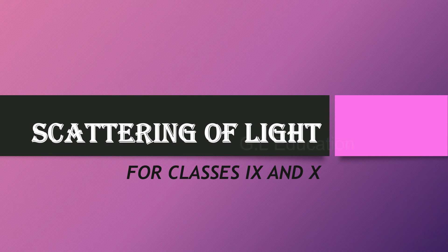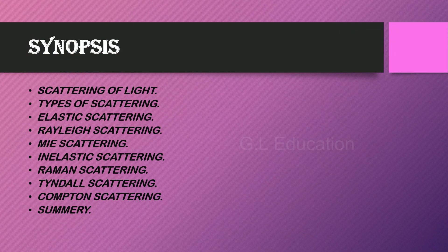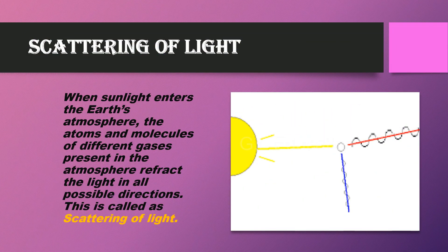Scattering of Light for Classes 9 and 10. When sunlight enters the atmosphere, the atoms and molecules of different gases present in the atmosphere refract the light in all possible directions. This is called scattering of light.